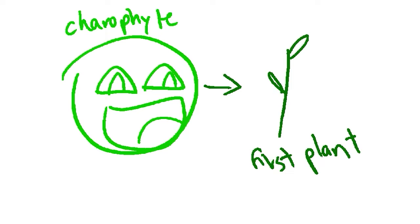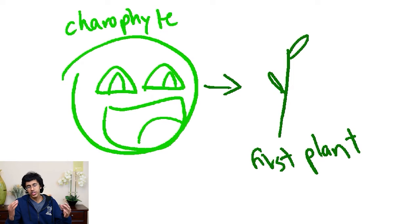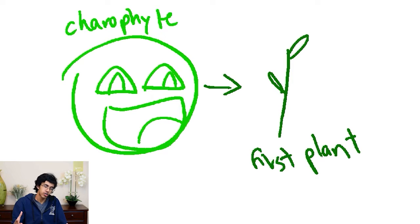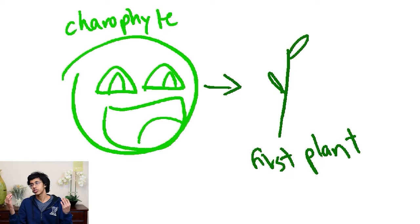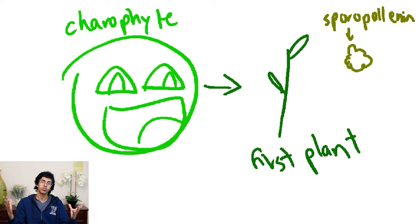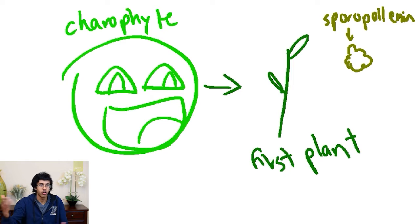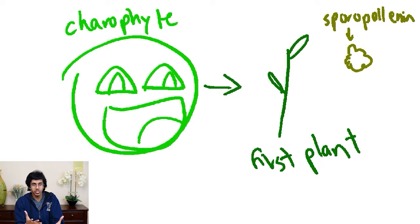These first plants kept a couple characteristics of these carophytes. The one important one is that they have sporopollenin, which is basically the thing that covered their spores or pollen in either case. Which makes sense, right? Spores, pollen, sporopollenin - that's pretty epic.